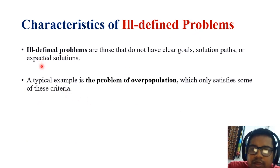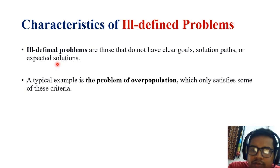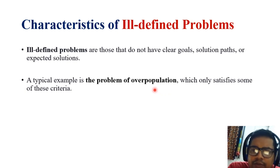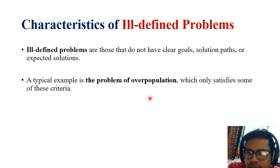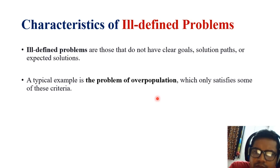An ill-defined problem is essentially the opposite of a well-defined problem. In a well-defined problem we have a clear goal, clear solution path, and expected solution — in an ill-defined problem these are not present. The typical example is the problem of overpopulation: we cannot have a specific single solution. There are several ways to reduce overpopulation growth, such as controlling the birth rate, and many other things — we cannot execute this problem through one particular solution path.